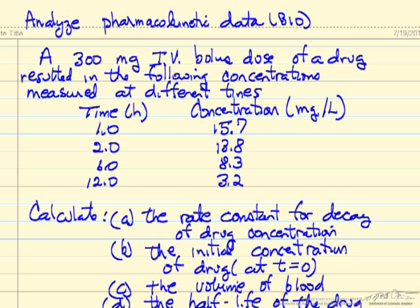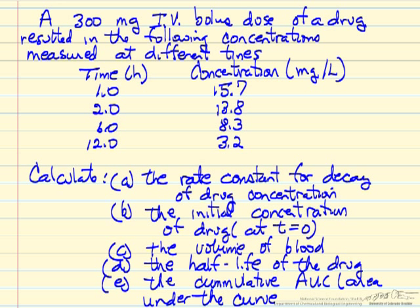Here's what we want to calculate from these data. What's the rate constant for decay of the drug concentration? What's the initial concentration? In other words, right after we inject it, we only made a measurement after 1 hour. Can we back calculate what was the concentration at time equals zero?